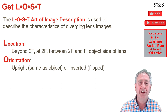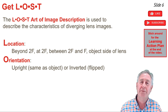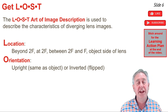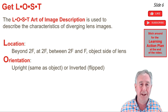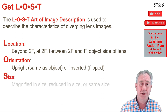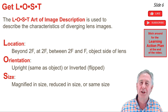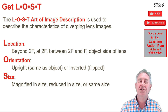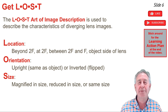The O of LOST refers to orientation — upright or inverted. A right-side-up object with a right-side-up image is described as upright; a right-side-up object with an upside-down image is described as inverted. The S of LOST refers to the size of the image: magnified if the image is larger than the object, or reduced if the image is smaller than the object, or the same size as the object.